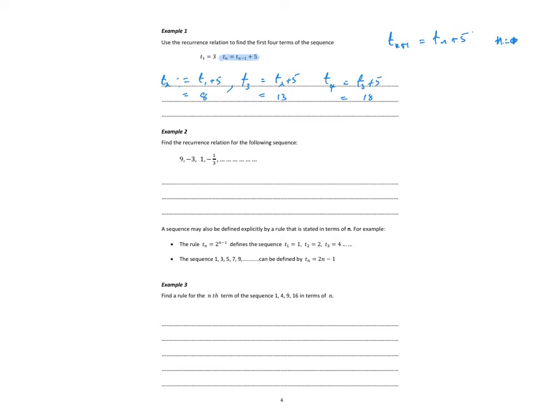Find the recurrence relations for the following. So what's happening here, each term is being multiplied by minus a third. So we could say T1 = 9, and then Tn equals the previous one times minus a third. Let's do a quick check. We're going to start with n = 2, so T2 = -1/3 times T(n-1), which is T1, and -1/3 times 9 equals -3.